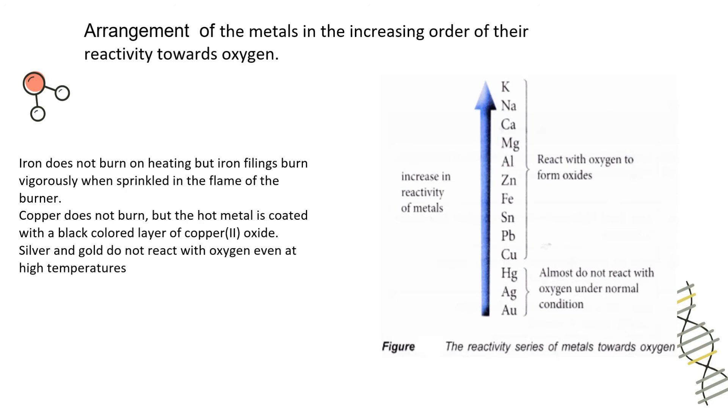Now arrangement of metals in increasing order of their reactivity towards oxygen. This is the whole list of metals you are seeing on your screen showing their reactivity towards oxygen. The highly reactive metal here is potassium. Potassium is the metal which you won't keep open because if you keep the potassium open it will burn. So it will be very dangerous to keep potassium open.